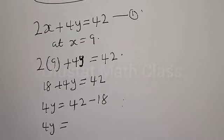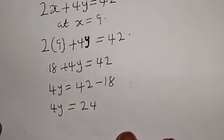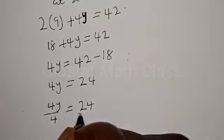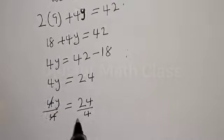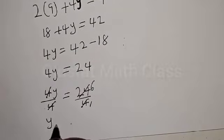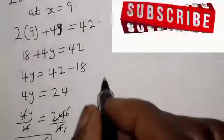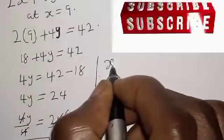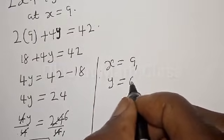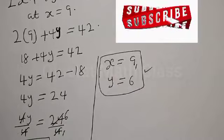Then 4y is equal to 42 minus 18, which is 24. Let's divide both sides by 4: 4y divided by 4 is equal to 24 divided by 4. Therefore y is equal to 6. Our final answer for question one is x is equal to 9 and y is equal to 6.